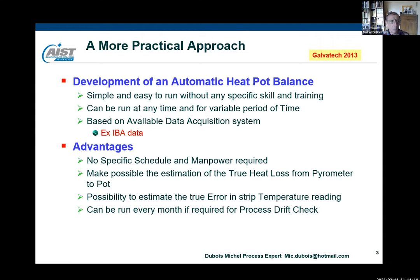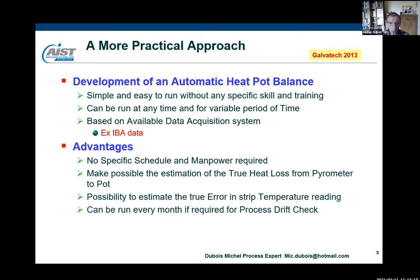The advantage of this approach is no specific schedule or manpower required — you take the classical data available. It makes possible the estimation of the true heat loss from the pyrometer to the pot, which is very important because you have two unknowns in the system: the heat loss and the offset of the pyrometer. It can be run every month if required. I recommend doing this once a month to check process drift, because when the process drifts smoothly, you never see the difference. In galvanizing, once a big crisis of defects appears, you cannot compare to what it was one year before.